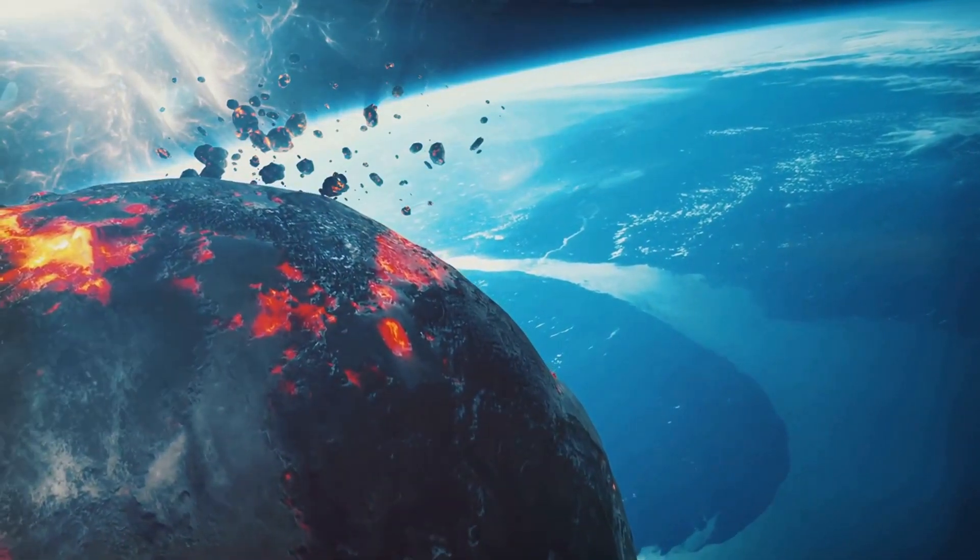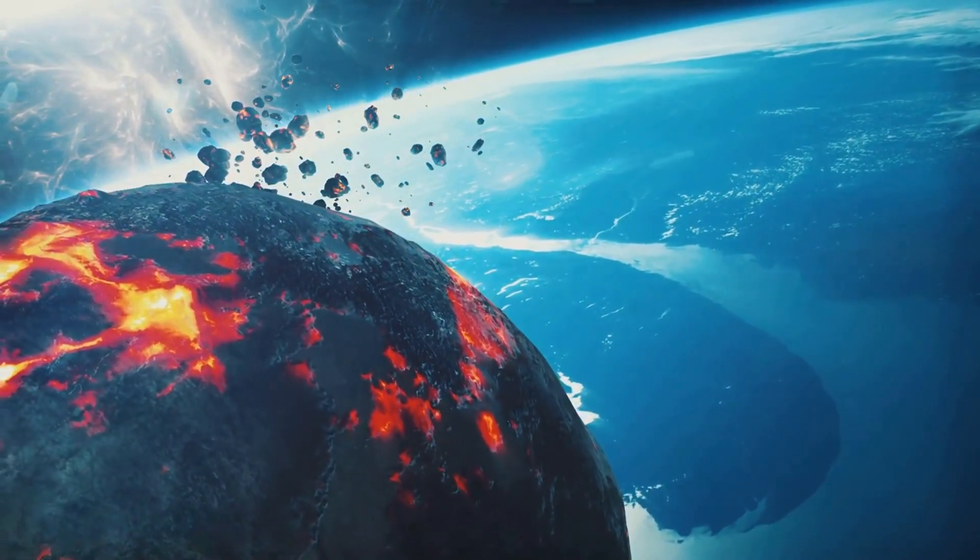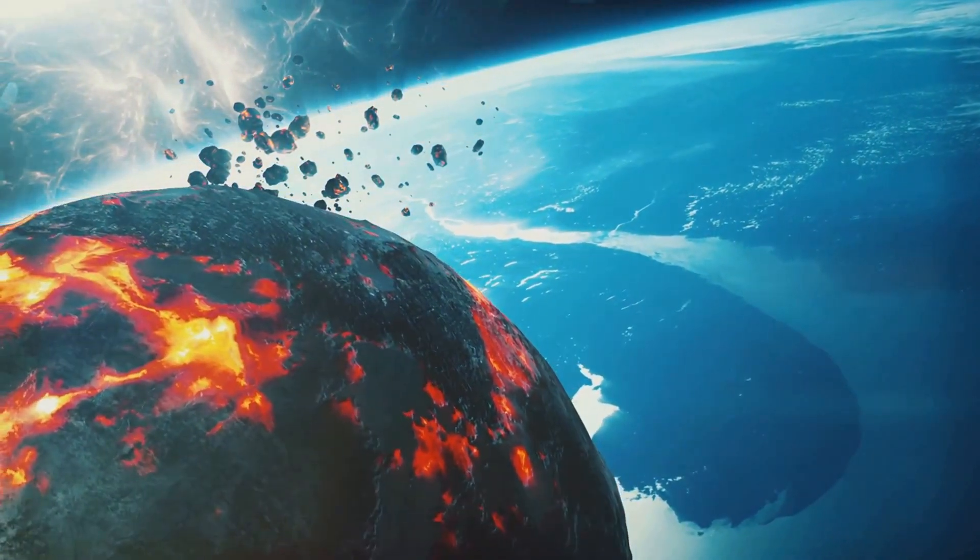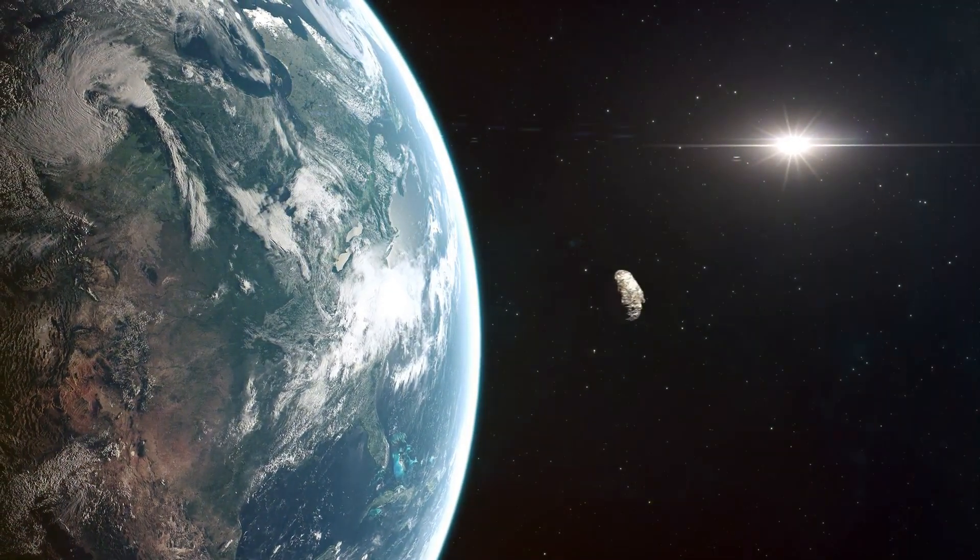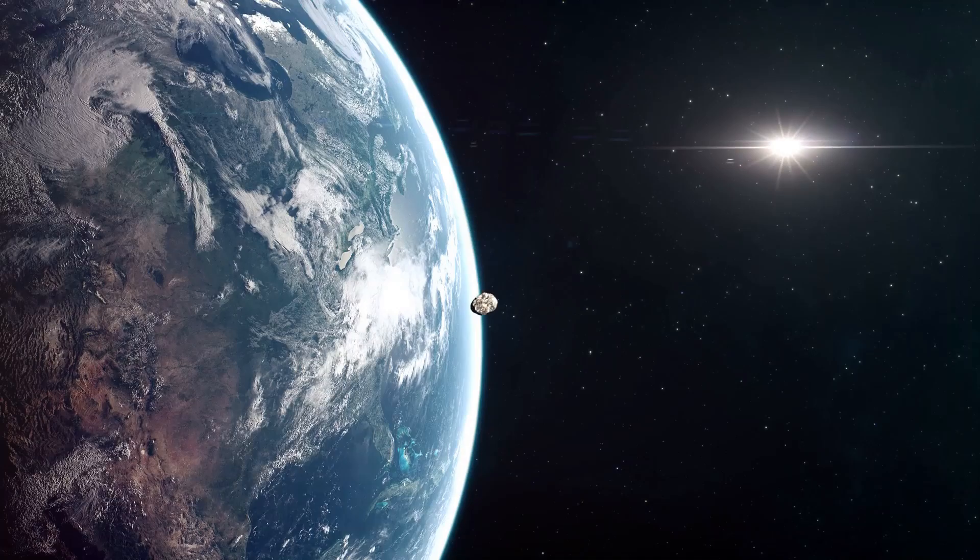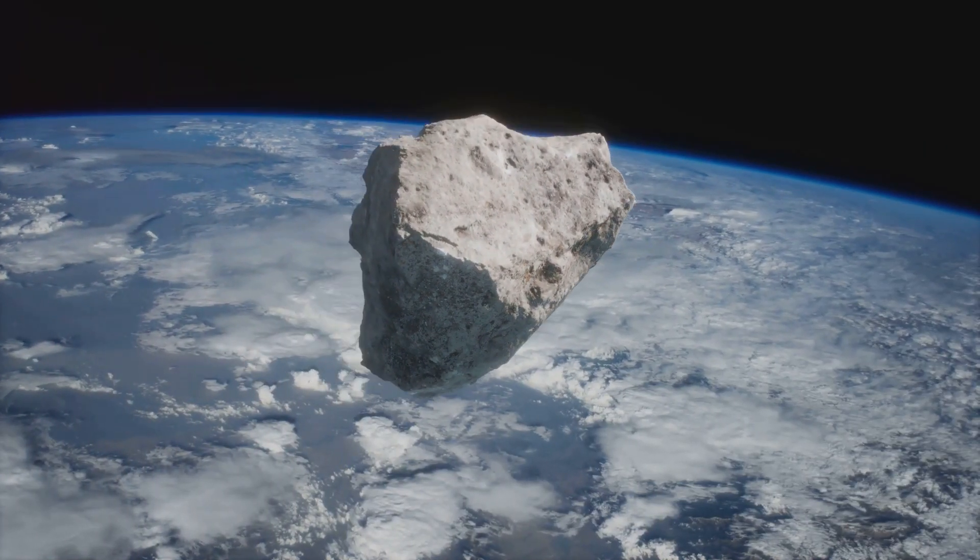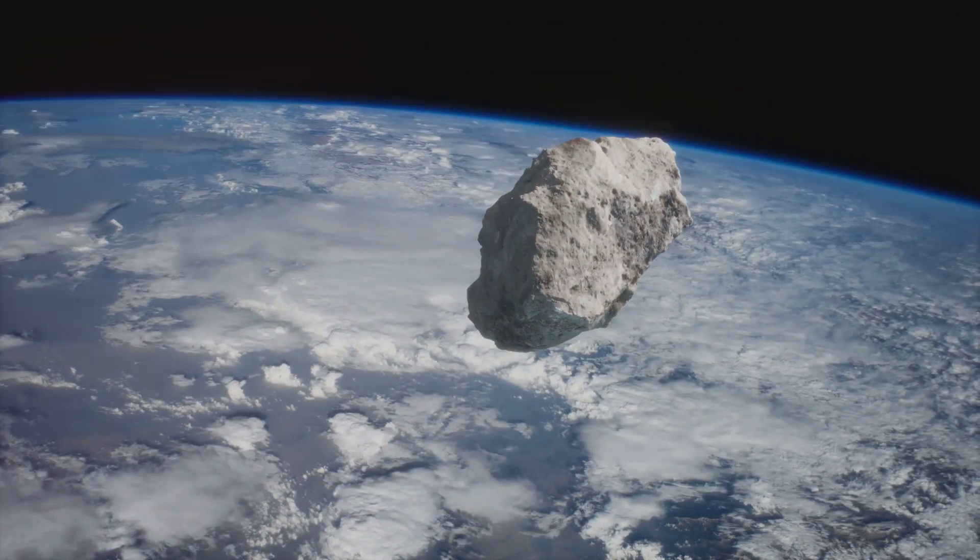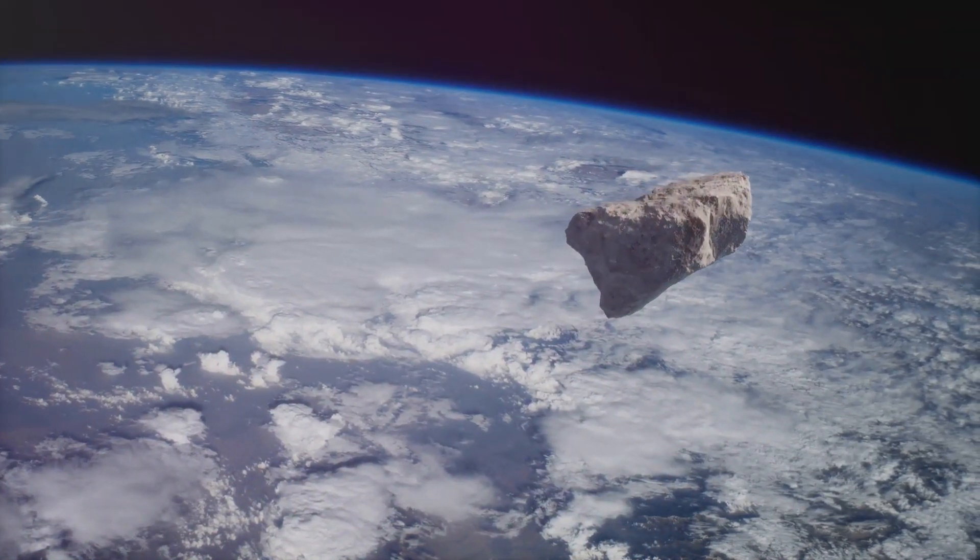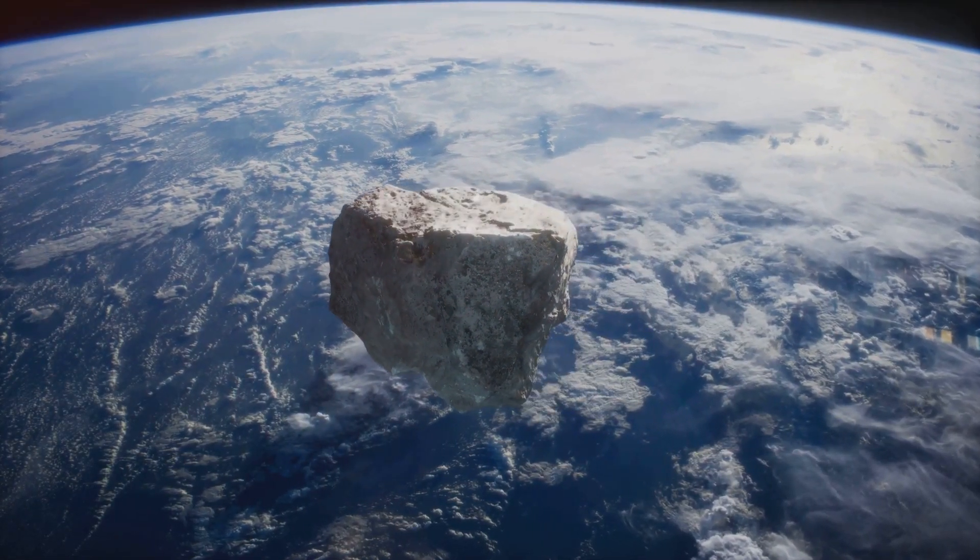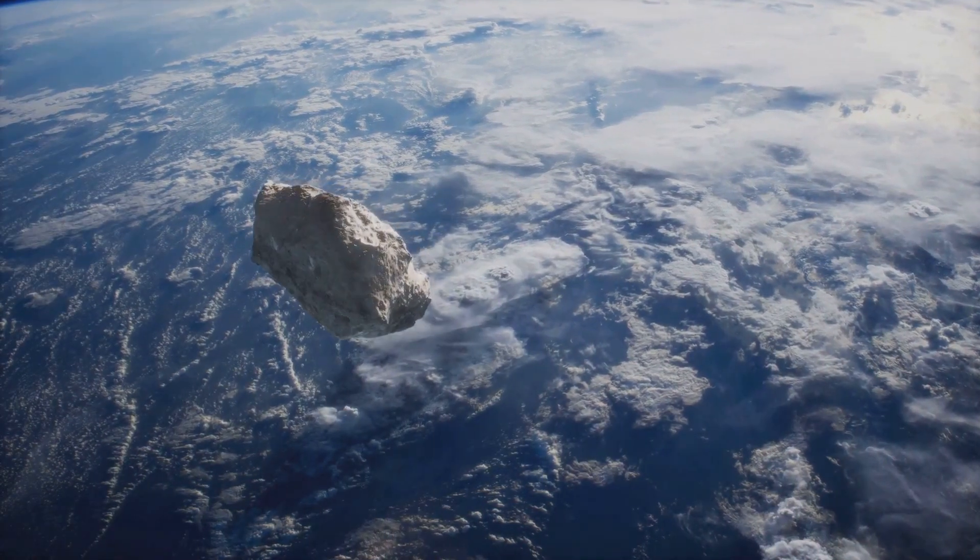Now let's talk about potential impact. If Apophis were to collide with Earth, the effects would be catastrophic. We're talking about an explosion more than 65,000 times more powerful than the atomic bomb dropped on Hiroshima. And the energy released? That would be equivalent to over a billion tons of TNT. But before we all start building underground bunkers, let's remember the odds. The chances of Apophis hitting Earth on April 2029 are about 1 in 150,000. To put that into perspective, you're more likely to win the lottery than to see Apophis collide with Earth.